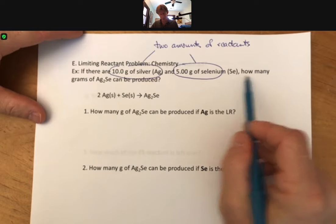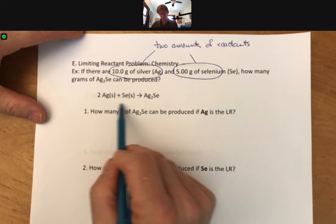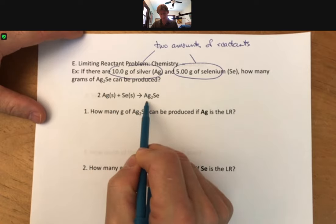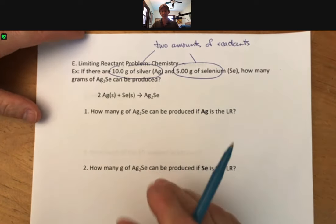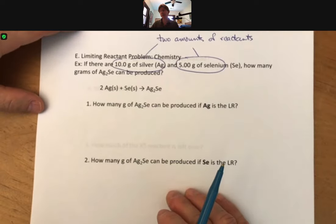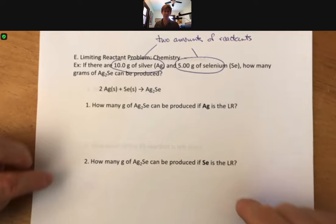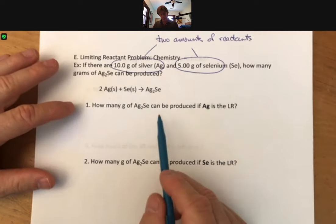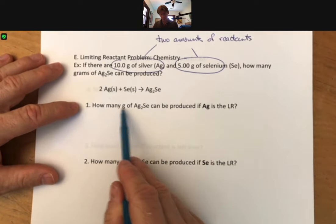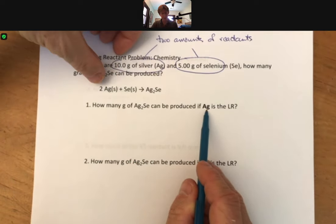The question is how many grams of silver selenide can be produced? We've got our balanced reaction. Good, it is balanced. We're going to go through the entire process step by step this time, and eventually we're just going to give you this first part and expect you to do all this work. First thing you're going to do is find how many grams of silver selenide can be produced if silver is the limiting reactant.